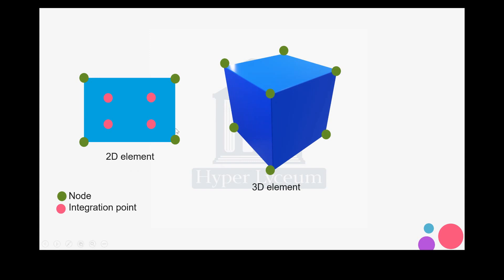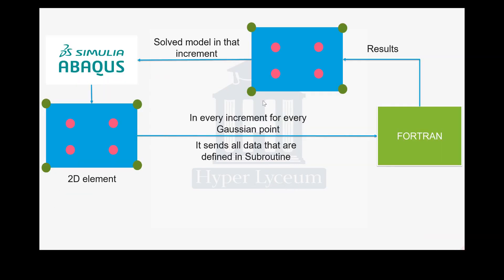We have 2D and 3D elements. Right now I'll only talk about 2D rectangle and quadratic elements. Each 2D element has four integration points and four nodes, as you can see here. In 3D, we have eight integration points in the middle — you cannot see them because they are inside the geometry — and it has eight nodes.